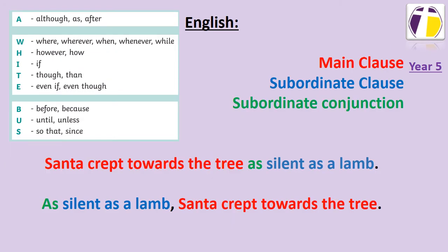Here I have a sentence — a very festive sentence — that contains a subordinate clause. I have written my sentence in two ways to show you how a subordinating conjunction can be used differently. My first sentence says: 'Santa crept towards the tree, as silent as a lamb.' As you can see from the colours, 'Santa crept towards the tree' is my main clause — that is the most important part of my sentence; it contains my subject and my verb. 'As silent as a lamb' is a subordinate clause. It doesn't really make sense on its own and it needs to be linked to the main part of the sentence.